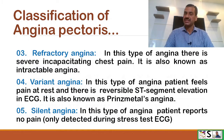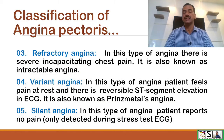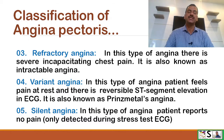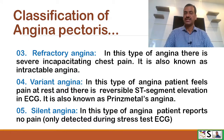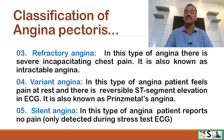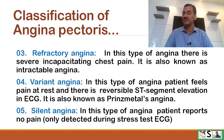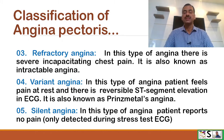Number three: refractory angina. In this type of angina, there is severe incapacitating chest pain. It is also known as intractable angina. Number four: variant angina. In this type, the patient feels pain even at rest, and there is reversible ST segment elevation in ECG. It is also known as Prinzmetal angina.